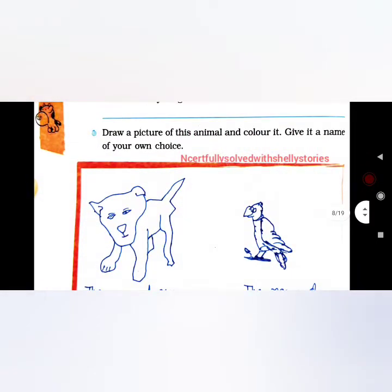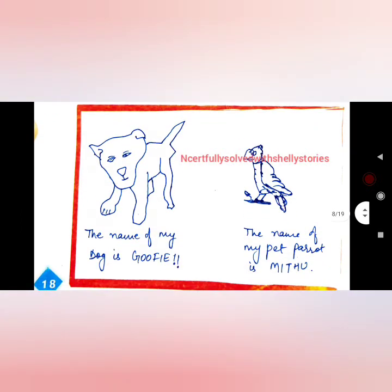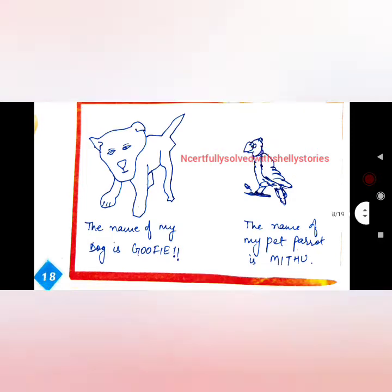Draw a picture of this animal and color it, and give it a name of your own choice. I have put two pets here — the name of my dog is Goofy. My drawing is not very good, so you can make yours much better. I know all of you will do better.